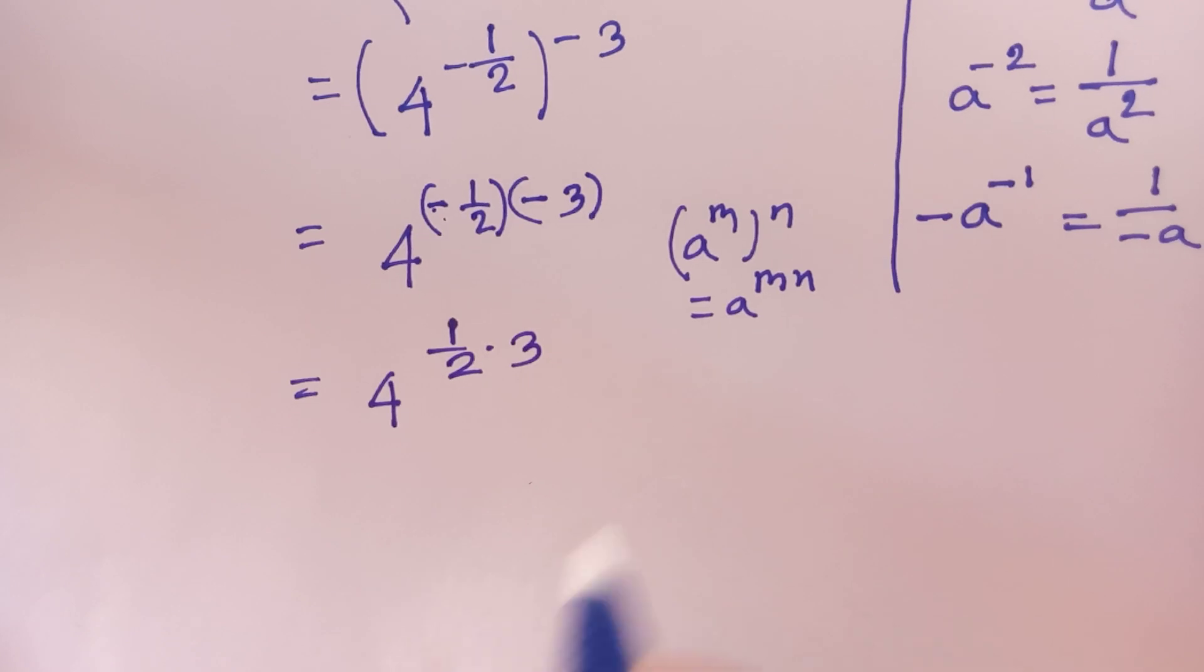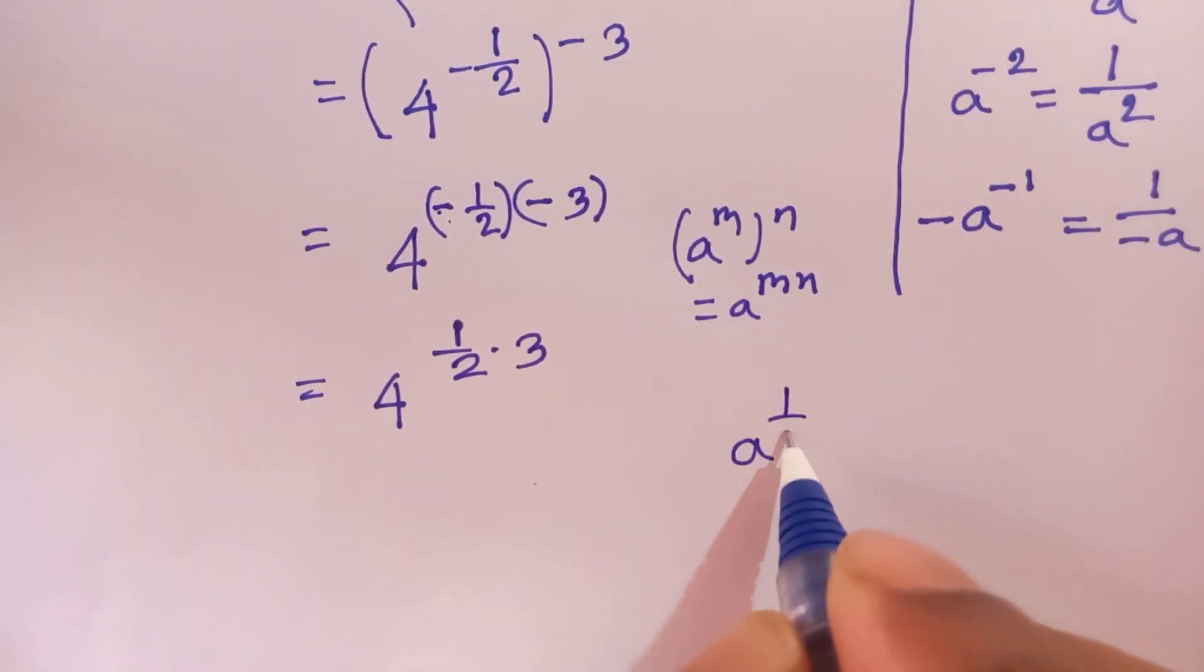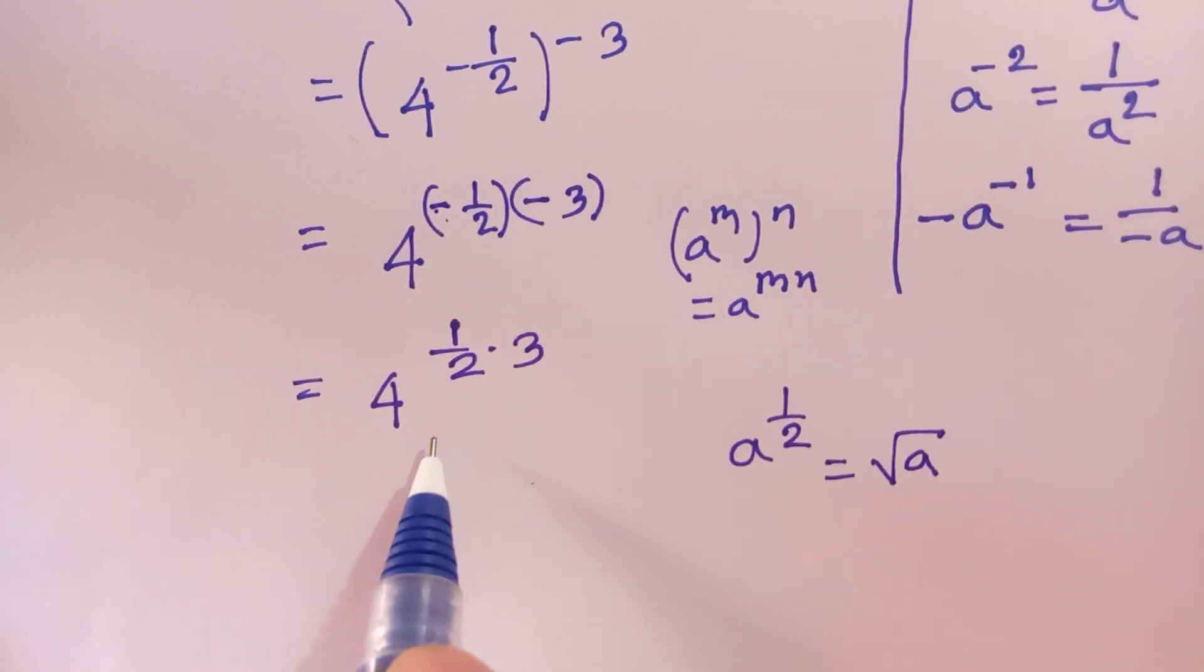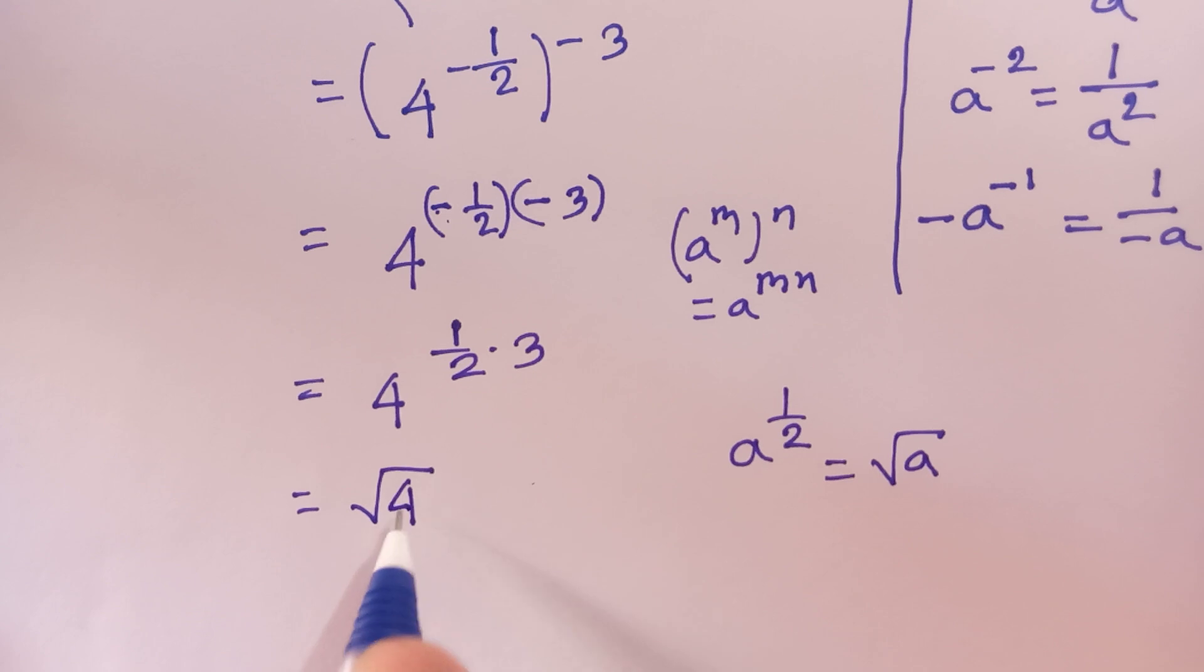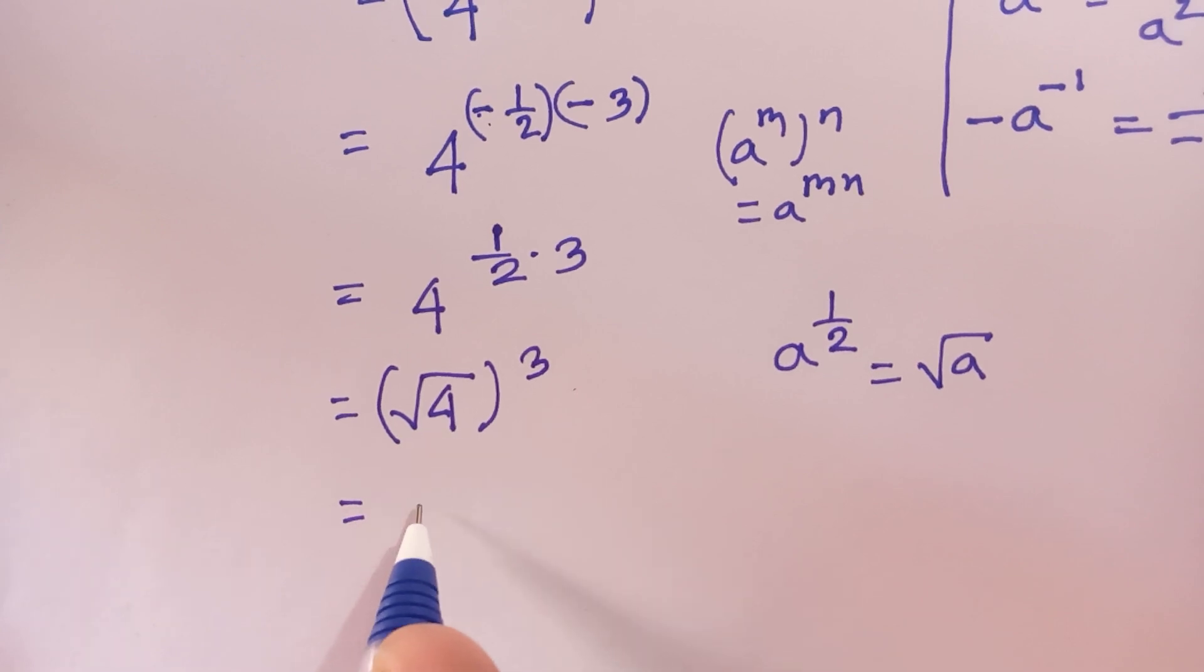We know a^(1/2) is equal to root a. So according to this formula we can write root 4 to the power of 3, which is equal to root 4, which is the same as 2^3.